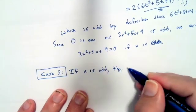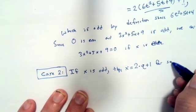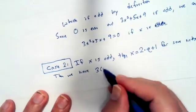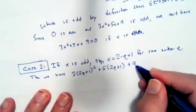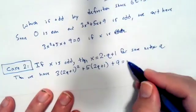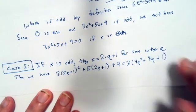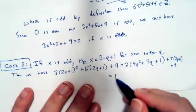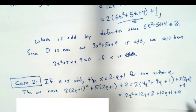So then we would have x equals 2 times q plus 1 for some integer q. Then we have 3 times (2q plus 1) squared plus 5 times (2q plus 1) plus 9, which equals 3 times (4q squared plus 4q plus 1) plus 5 times (2q plus 1) plus 9, which equals 12q squared plus 12q plus 3 plus 10q plus 1 plus 9.